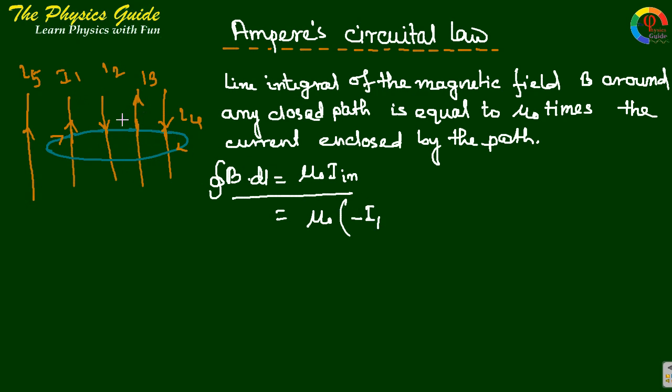I2 has a direction downward. It creates magnetic field in clockwise direction and our loop also in clockwise direction, so this gives plus result. I3 is in opposite direction, so minus I3.